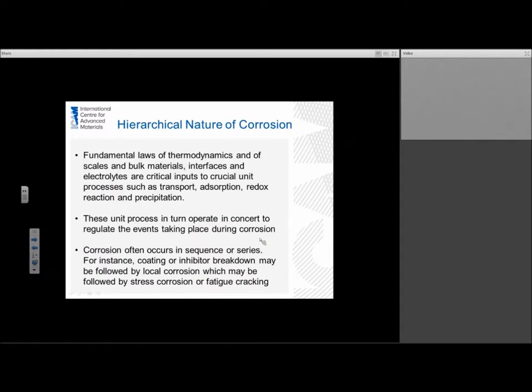The fundamental laws themselves of thermodynamics for scales and bulk materials, for interfaces and for the electrolytes that they sit in are critical inputs to crucial unit processes such as transport, adsorption, reduction, redox reaction, and precipitation. These unit processes in turn operate in concert to regulate the events taking place during corrosion. It should be noted that corrosion often occurs in sequences or series. For instance, a coating or an inhibitor may fail and lead to localized corrosion, that might lead to stress corrosion cracking, fatigue cracking and eventual failure of the component.